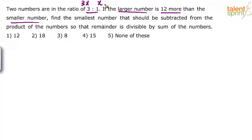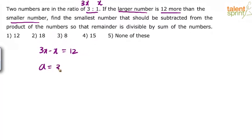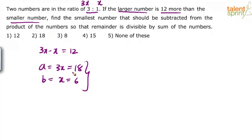So we say 3x and x. The larger number is 12 more than the smaller number. The larger is 3x, the smaller is x, so 3x minus x equals 12 — that gives us 2x = 12, meaning x = 6. Therefore, the numbers are: a = 3x = 18 and b = x = 6. Check: 18 to 6 is 3 to 1, and 18 is 12 more than 6.